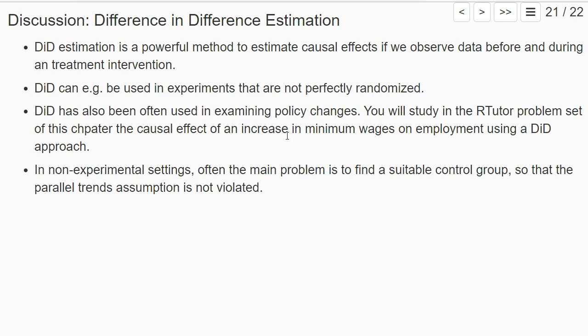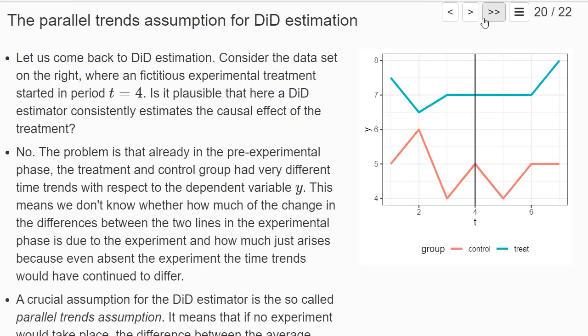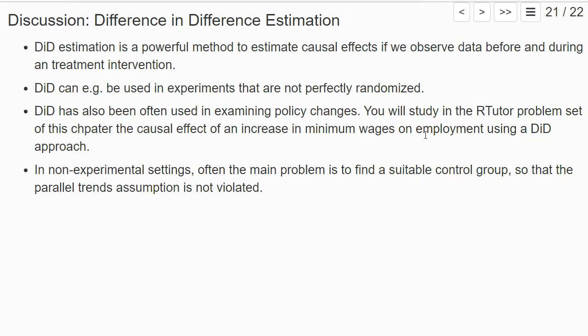However, the difference-in-differences approach does not always work. In particular, the parallel trends assumption must be satisfied, or at least it must be convincing that it is satisfied, and this is not always the case — particularly in non-experimental settings. Often the main problem is to find a suitable control group in a non-experimental setting, so that it is convincing that the parallel trends assumption is not violated. You will look at one example in the problem set, and depending on how much time we have in the course, we may also look at other examples later on.